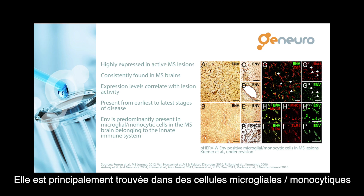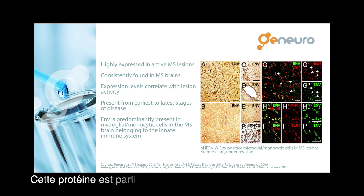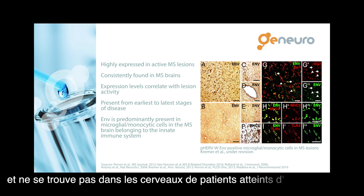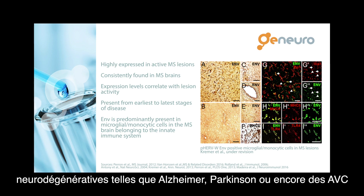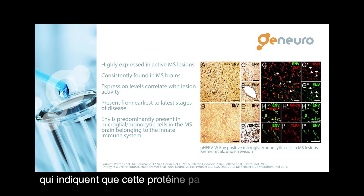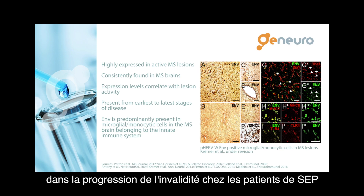It is mainly found on microglial monocytic cells, which belong to the innate immune system. This protein is very specific to demyelinating lesions in MS — it is not found in brain samples from patients with other neurodegenerative diseases such as Alzheimer's, Parkinson's, or stroke. As we will see in our next presentation, there is today very strong evidence that this pathogenic protein plays a core role in the mechanisms that drive the progression of disability in multiple sclerosis.